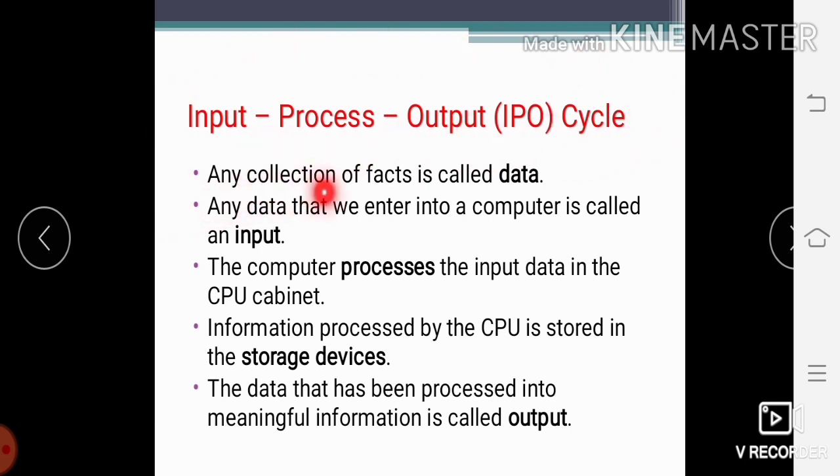Any collection of facts is called data. It means we have a raw material. Suppose if I have a library of books, the library of books is called data. Any data that we enter into a computer is called an input. If I select one book from that library, it is called our input. It means I select some data from that raw material, from that big and huge material.